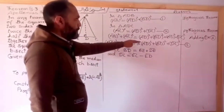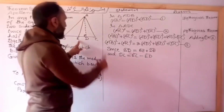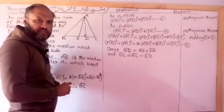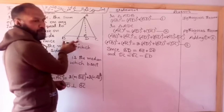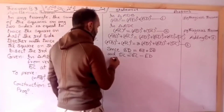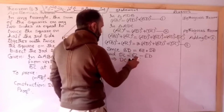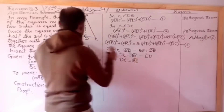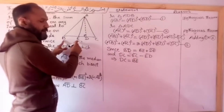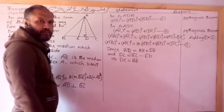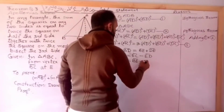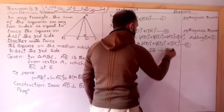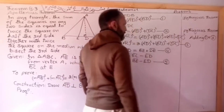From equation 3: EC equals BE in distance, which implies DC equals EC minus ED. These are the values we will substitute.